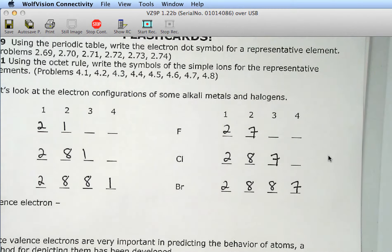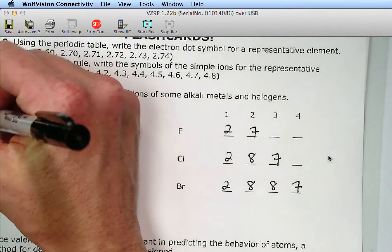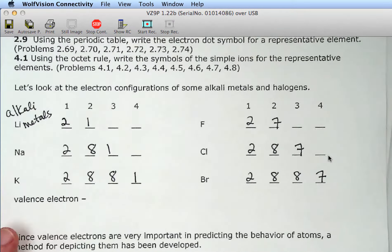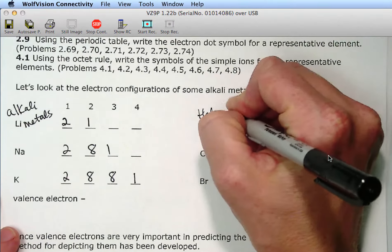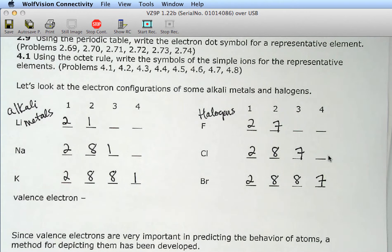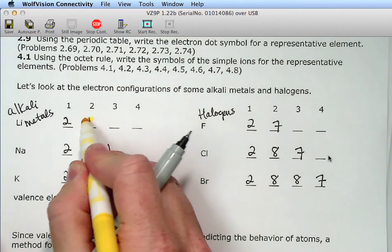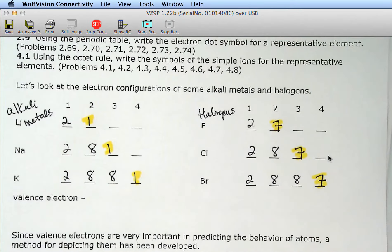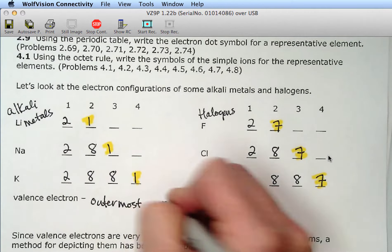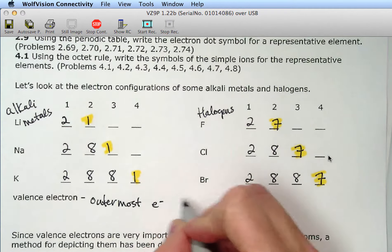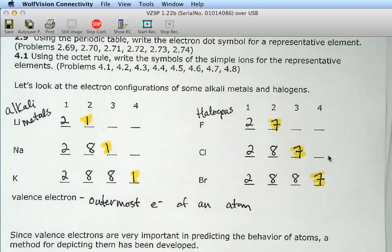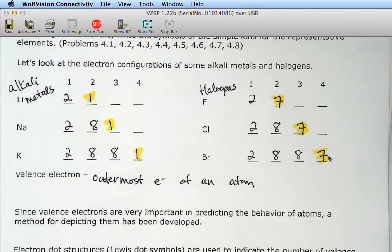So what group do lithium, sodium, and potassium belong to? Alkali metals. Alkali metals. Good. What about fluorine, chlorine, and bromine? Halogens. Halogens. Good.